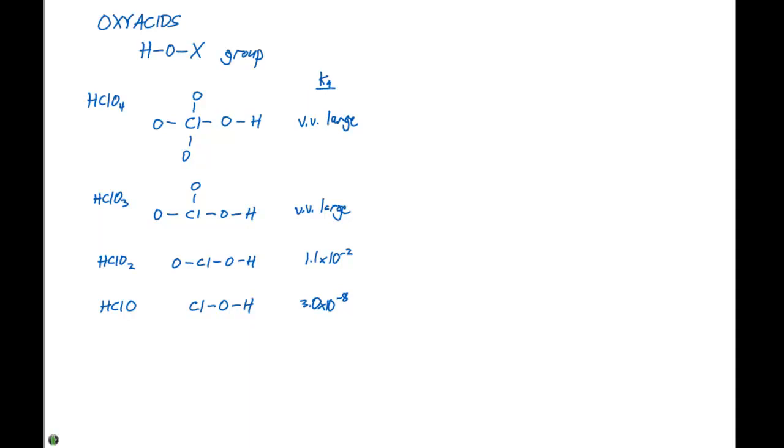So let's try to determine some type of trend to figure out why the Ka decreases so much down this series. Acidity is directly proportional to the number of terminal oxygens and oxidation number.